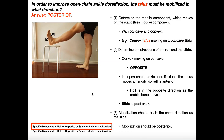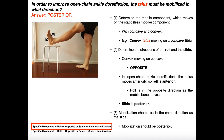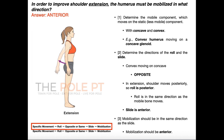Welcome back to Biomechanics on Catalyst University. In this video, we're going to do another arthrokinematic movement example problem where we answer this question: in order to improve open chain ankle dorsiflexion, the talus must be mobilized in what direction? We'll also do a similar question for dorsiflexion in the closed chain position. I highly recommend you watch the previous video in this playlist, where I cover this process in more detail.